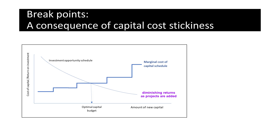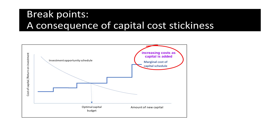Secondly, which is the effective interest in this presentation, the company's WACC increases as it raises more capital, in a pattern of increasing costs called the marginal cost of capital schedule. The point of intersection of the two schedules is the optimal capital budget.